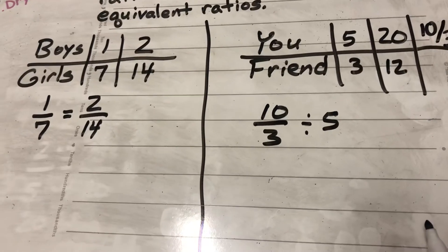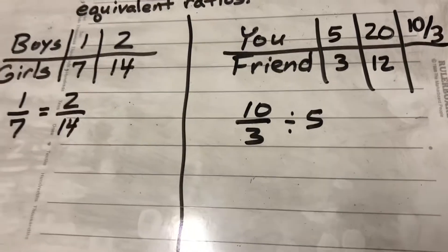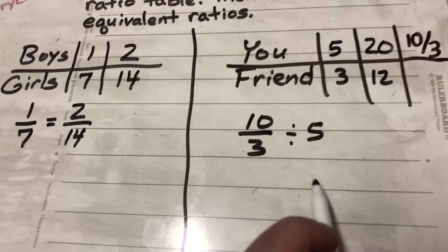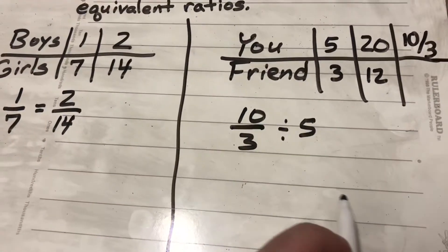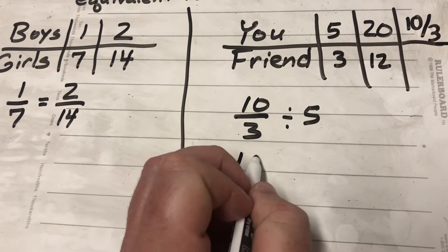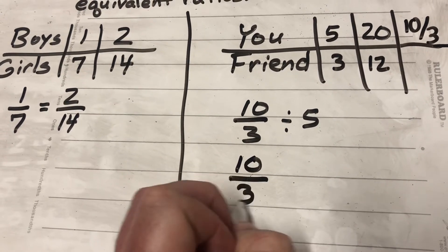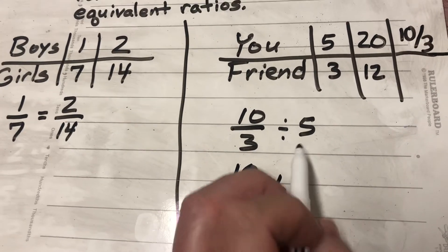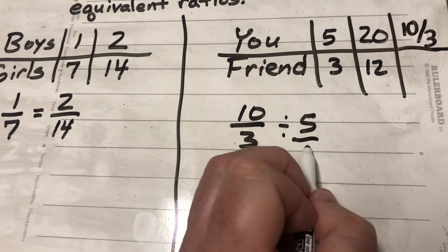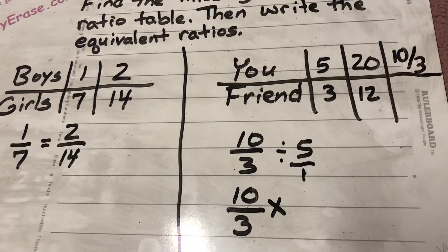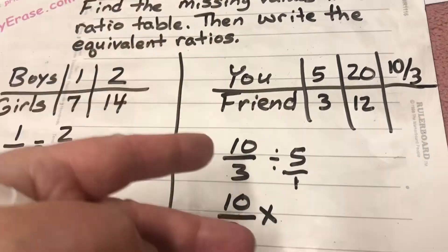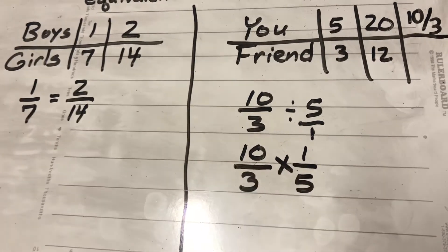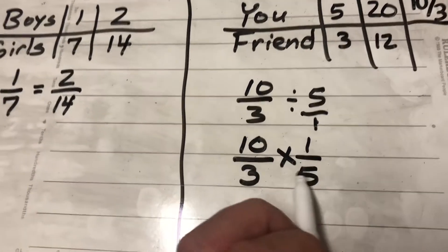And this 6th grade is another example of how math builds on each other. You know, we did division of fractions back in Chapter 2, so we're going to utilize our prior knowledge here. Well, I know that my fraction, 10 over 3, my first one has to stay the same. My division sign has to become a multiplication sign. And that 5 as a fraction would be 5 over 1. But I have to make the reciprocal of the divisor and it becomes 1 over 5.